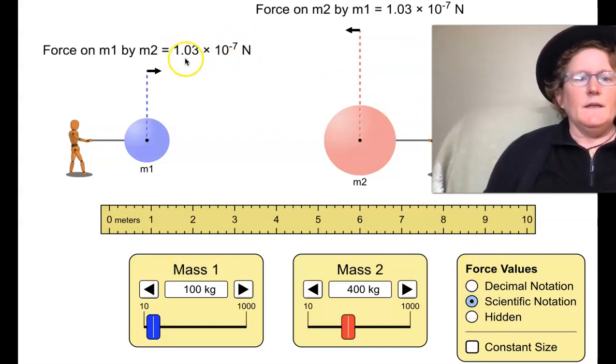Sometimes it's easier to write the number if we use scientific notation. You can see this is a number and it has a 10 to the negative something. This means the decimal point moves seven places this way to the left. And the bigger this exponent, this negative exponent gets, the smaller the number is.